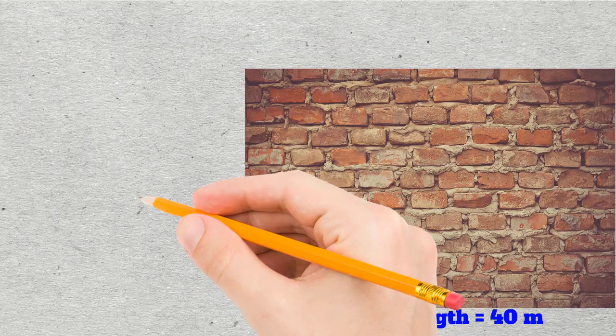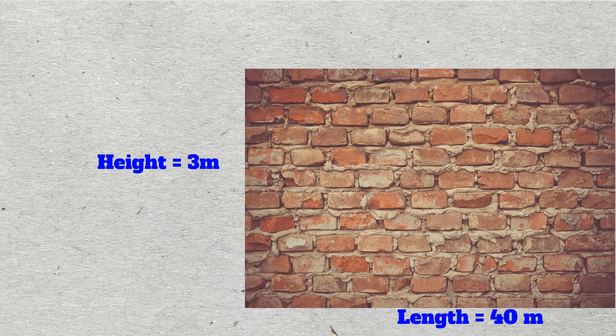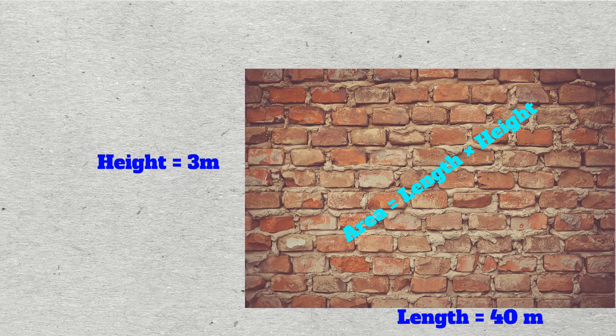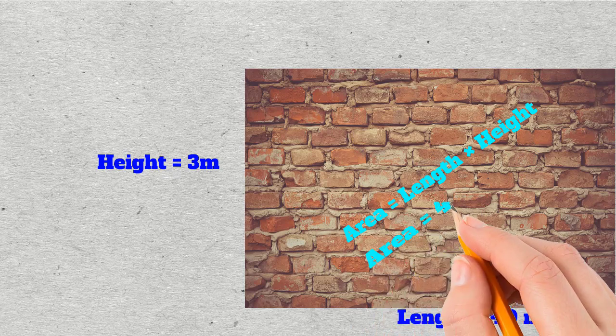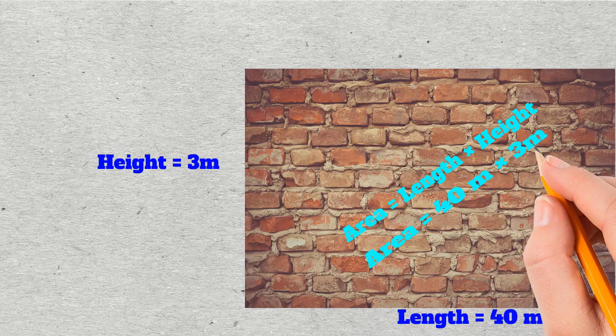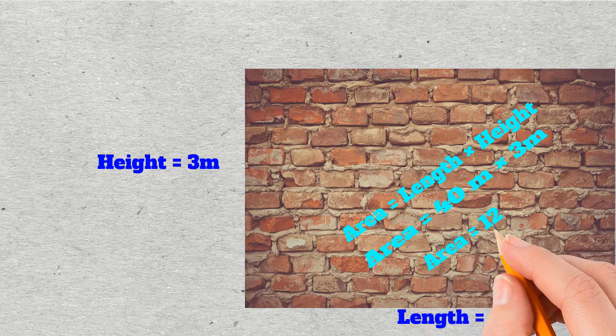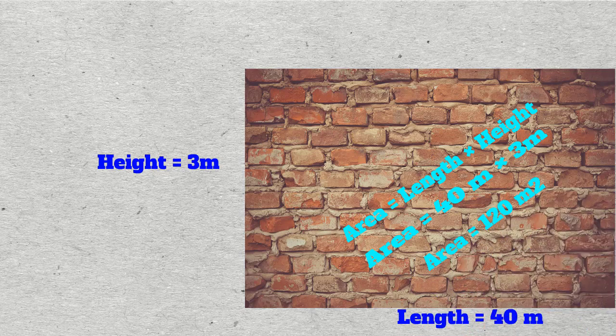Consider a wall having length 40 meters and height equal to 3 meters. Its front covering area for plaster will be equal to length multiplied by height. The length is 40 meters, multiply it with the height, that is 3 meters. By calculation, the area for the wall surface will be equal to 120 square meters.